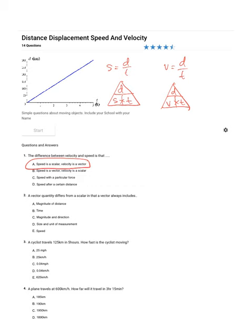A vector quantity differs from a scalar in that a vector always includes magnitude and direction. So it must be C.